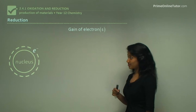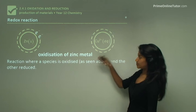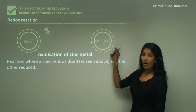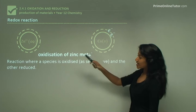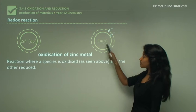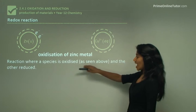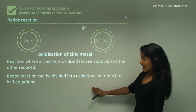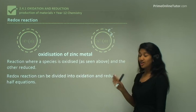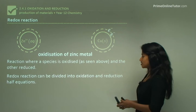Redox reactions - oxidation of zinc metal. We have zinc reacting with the copper ion, where two electrons from zinc attach to the copper ion to make copper metal. In a reaction, one species is oxidized and the other is reduced. A redox reaction can be divided into oxidation and reduction half equations - and the word 'redox' comes from these two words: reduction and oxidation.